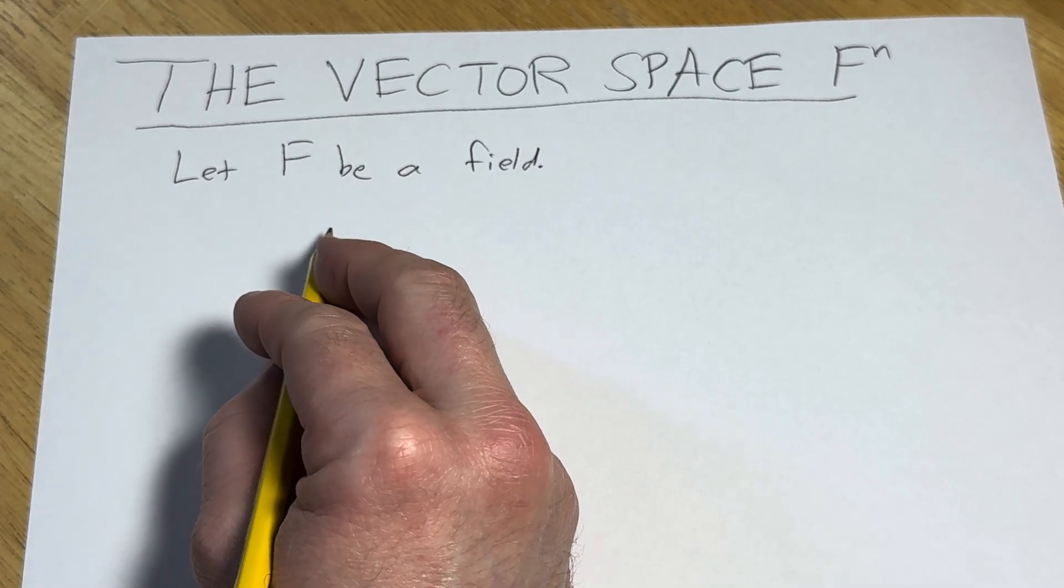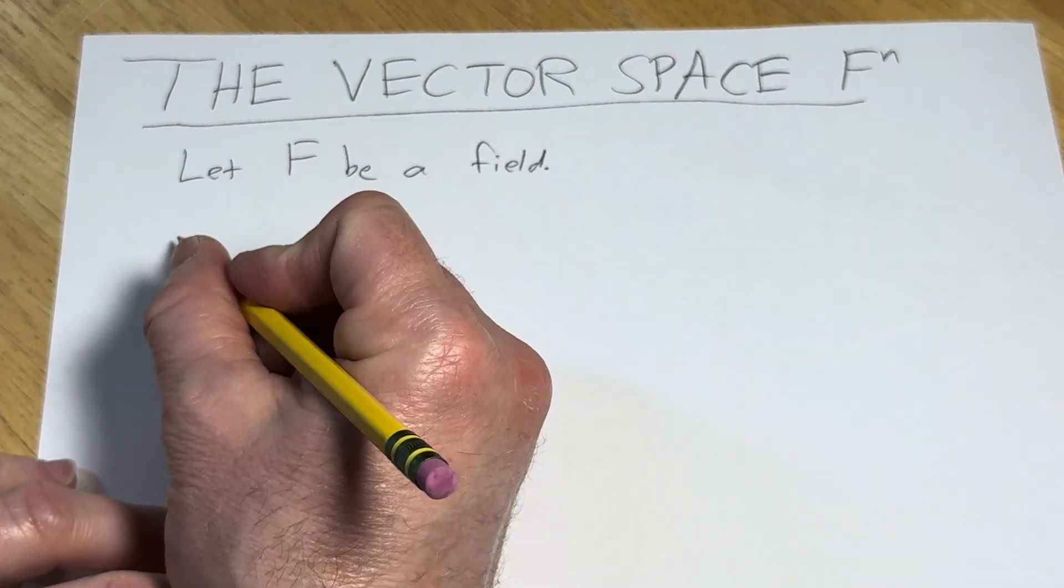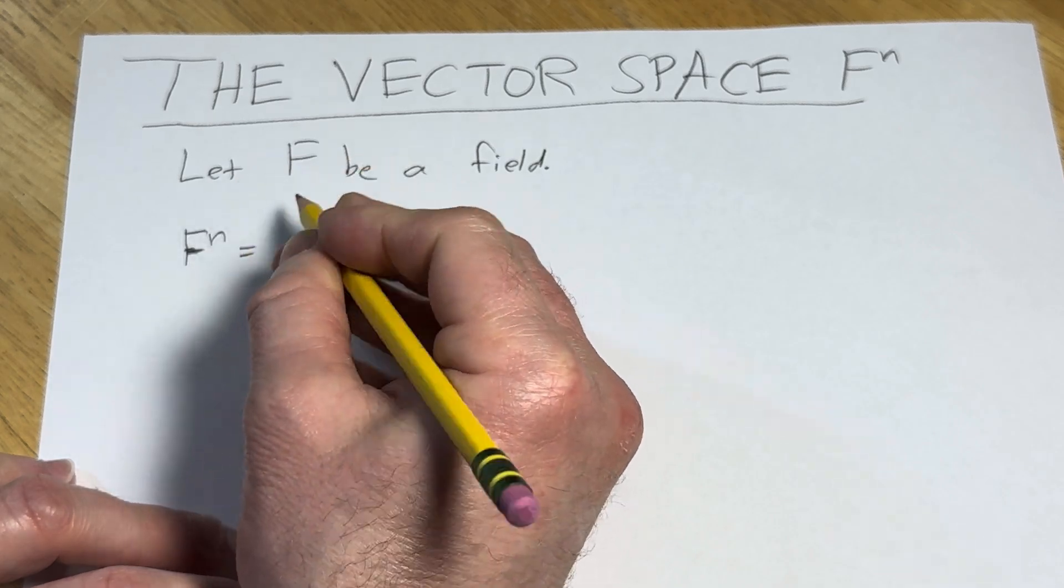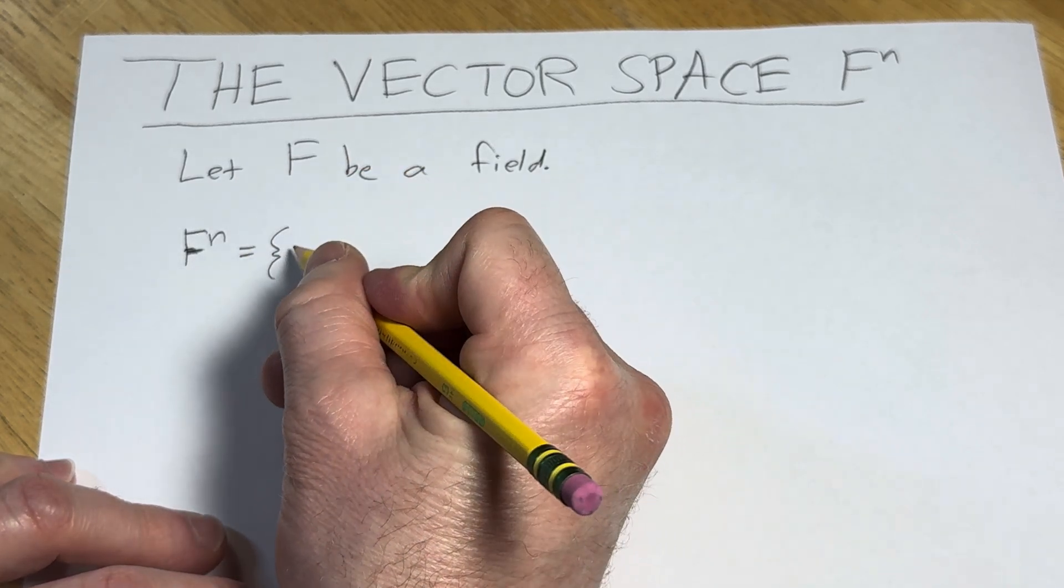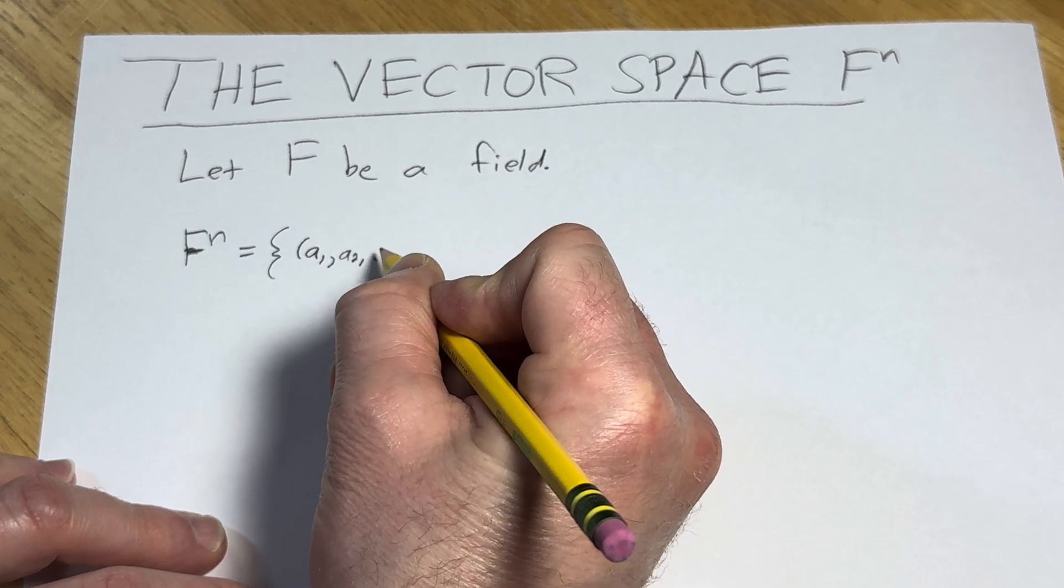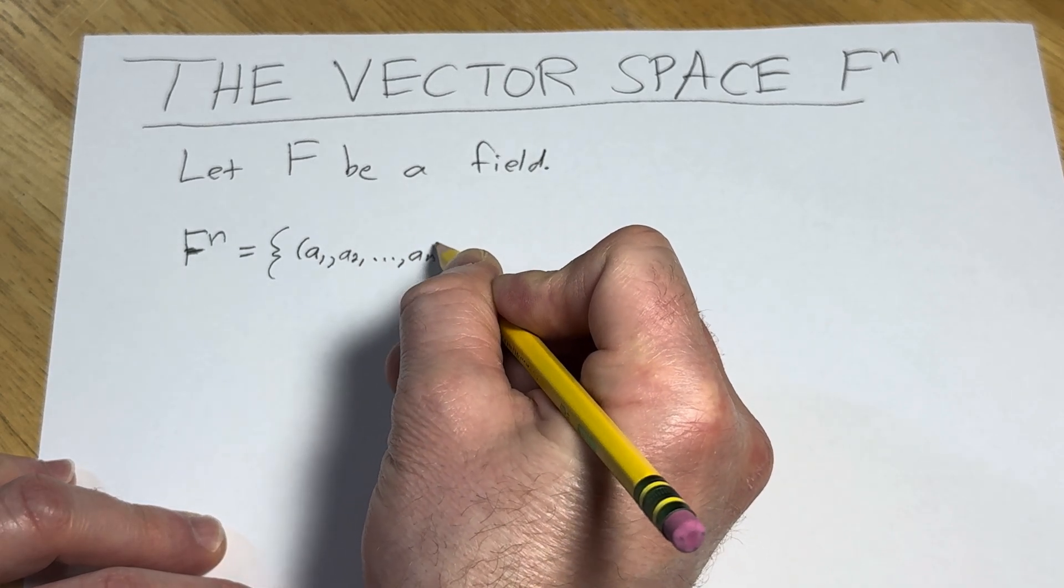And let's go ahead and actually write down what this set is. So it's the set of n-tuples. So F^n, or F to the n, is the set of all n-tuples: a sub 1, a sub 2, dot dot dot, a sub n,